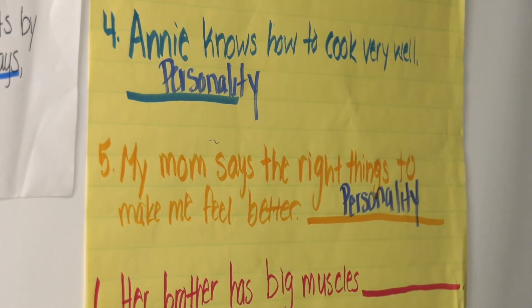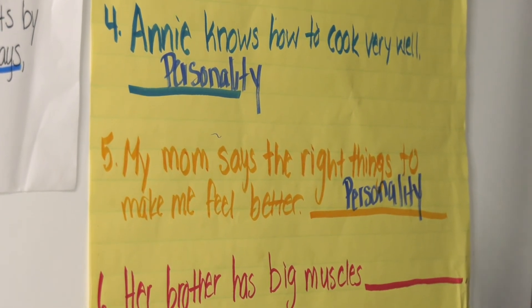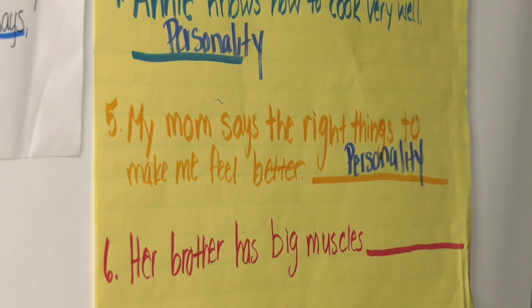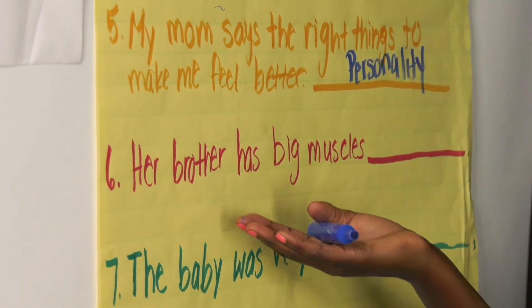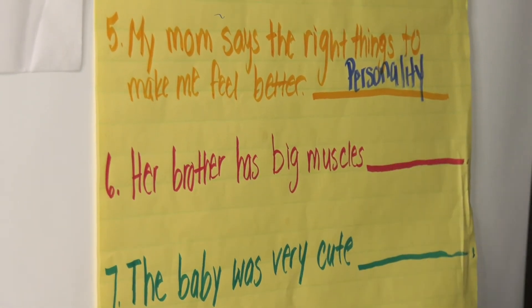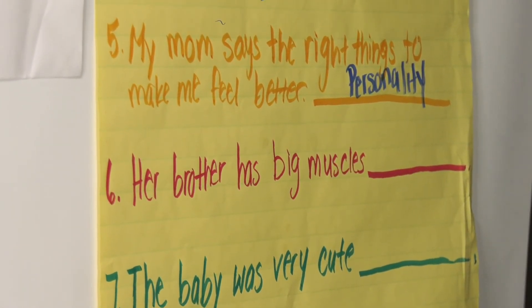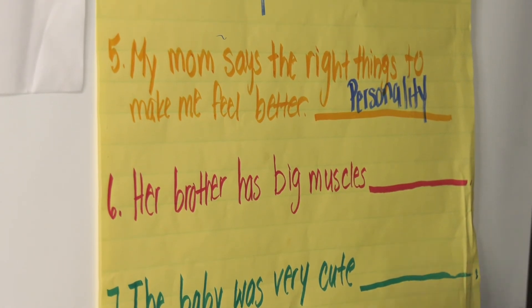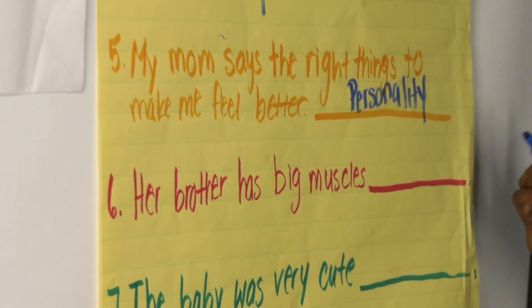Number six: her brother has big muscles. If we were to see this girl's brother, we can see with our eye that he has big muscles. So that is a physical trait.